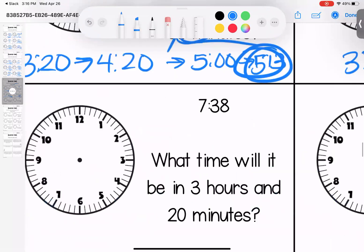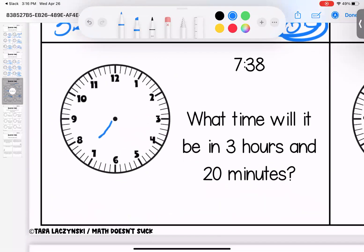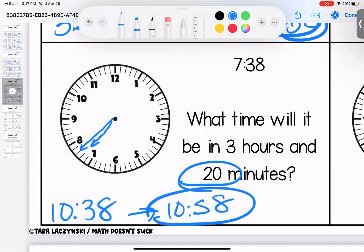Coming down here, it's 7:38. What time will it be in three hours and 20 minutes? 7, 8, 9, 10:38. Add another 20 minutes, 38, 48, 58, 10:58.